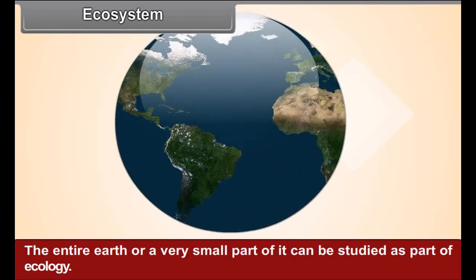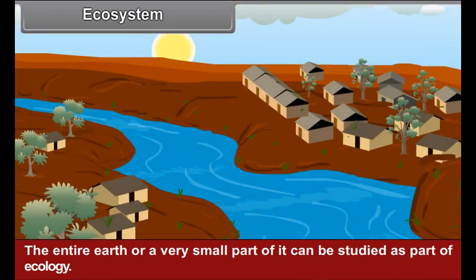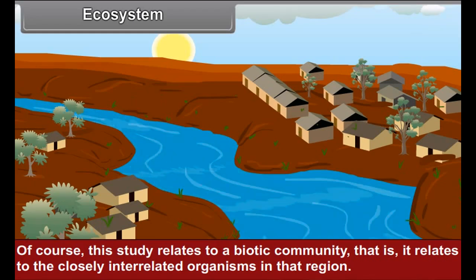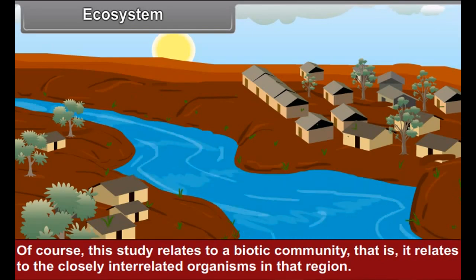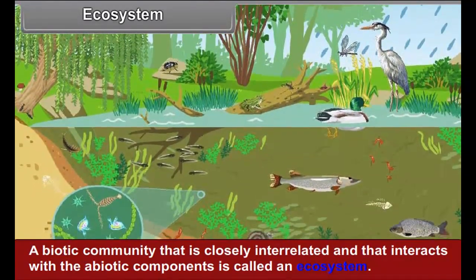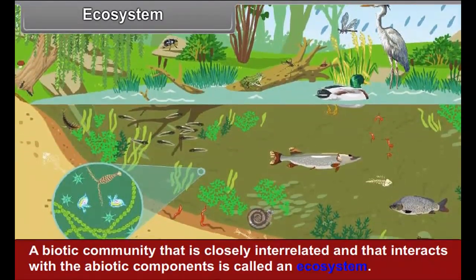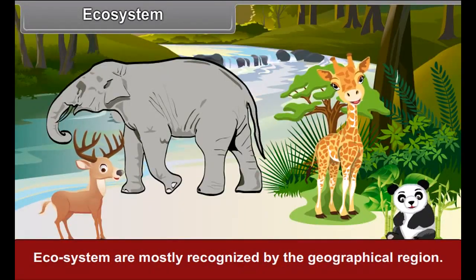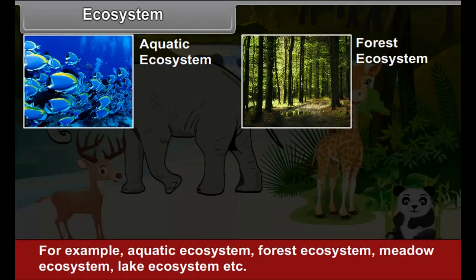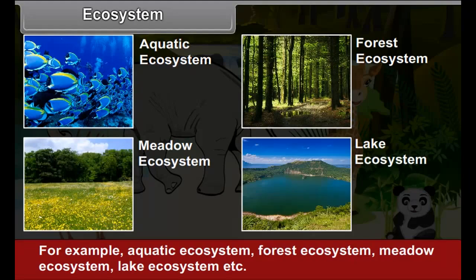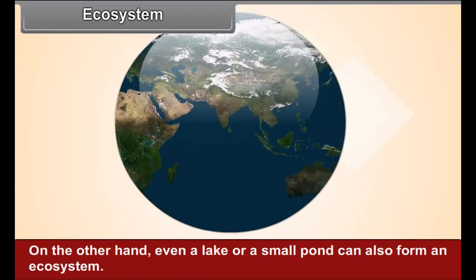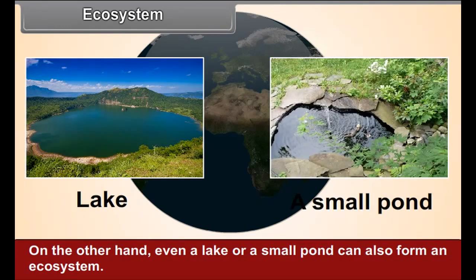Ecosystem: The entire earth or a very small part of it can be studied as a part of ecology. This study relates to a biotic community, i.e. closely interrelated organisms in a region. A biotic community that is closely interrelated and that interacts with the abiotic components is called an ecosystem. Ecosystems are mostly recognized by geographical region — for example, aquatic ecosystem, forest ecosystem, meadow ecosystem, lake ecosystem, etc. Our earth is an all-inclusive ecosystem; even a lake or a small pond can also form an ecosystem.